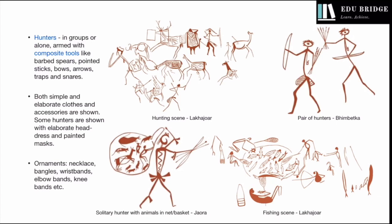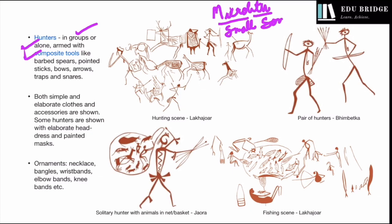Hunters have been shown either in groups or alone, using composite tools such as barbed spears, pointed sticks, bows, arrows, traps, and snares. These are complex tools in which more than one component is used. The characteristic stone tool technology of the Mesolithic period was known as microlith — micro meaning small and lith meaning stone — so these stone tools were less than 5 cm in size. They were attached to wooden shafts to make spears and arrows, or to sticks to make digging sticks.